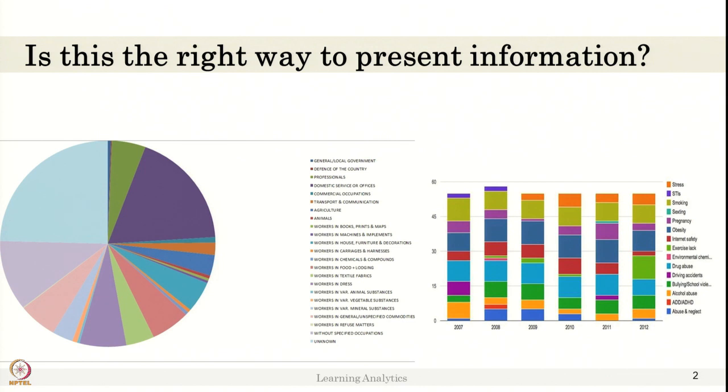I know the data might be really complicated data, we are putting a nice pie chart, still we are making more complicated for students to understand or the audiences to understand. Maybe how do you compare these two colors, so what this color means, where to look at it. So there are a lot of complications in this particular type of representations.